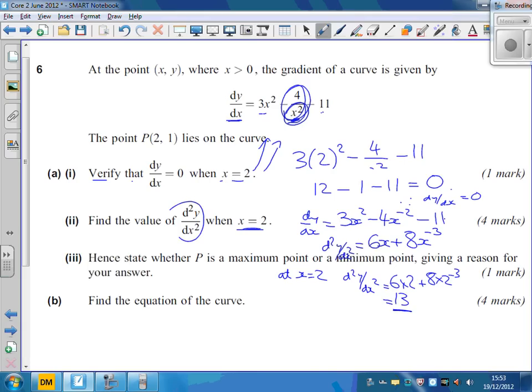So what does 13 tell you? 13 tells you that it's going to be a minimum point. Therefore, minimum since d²y/dx² is greater than 0. That's the reason for it. Give the reason for your answer - there's our reason there.